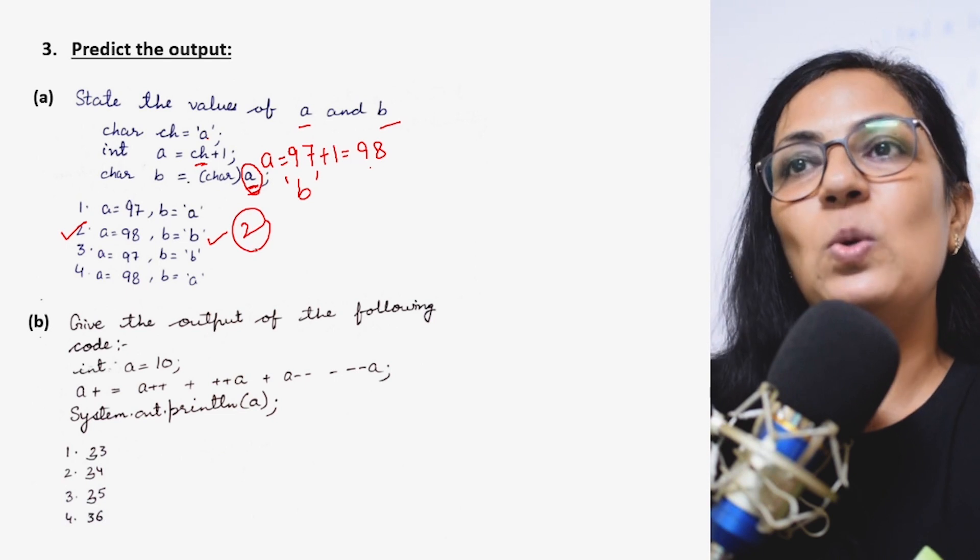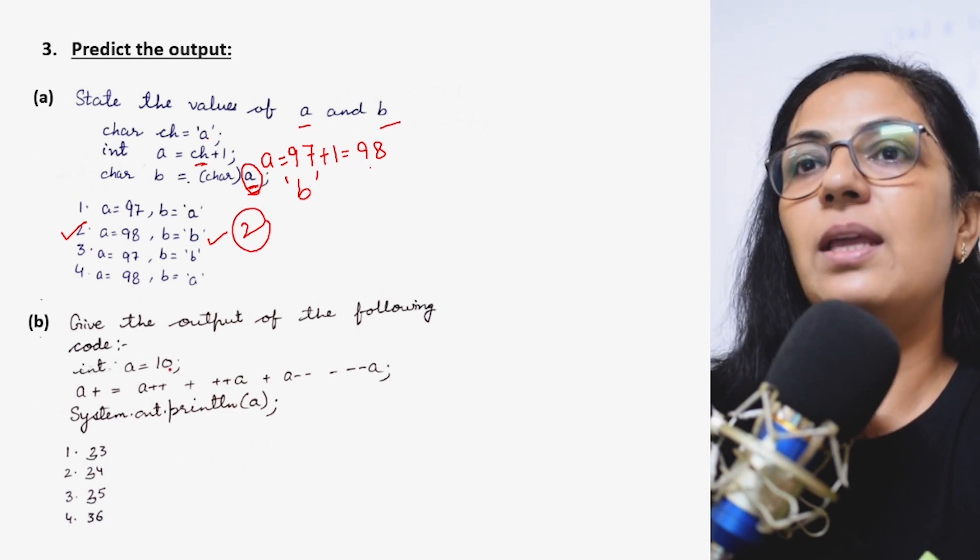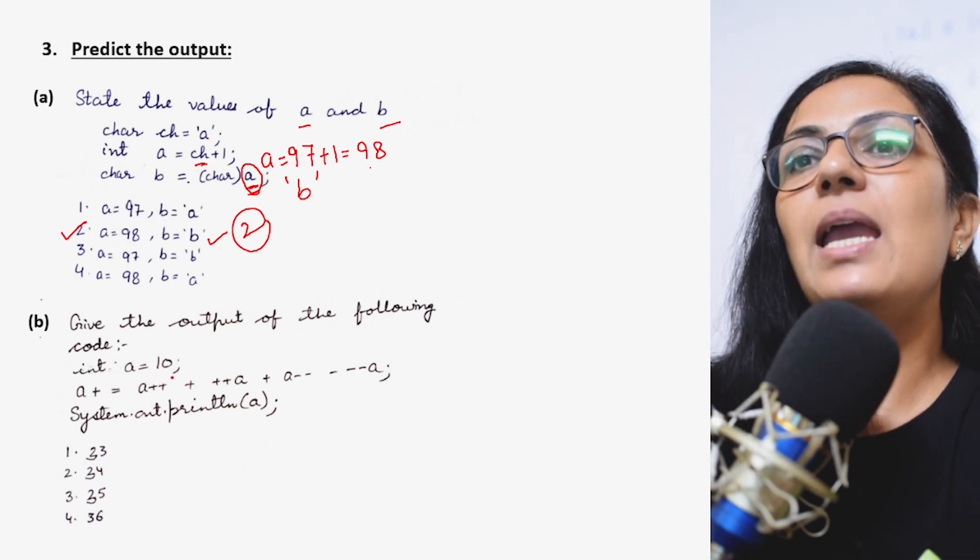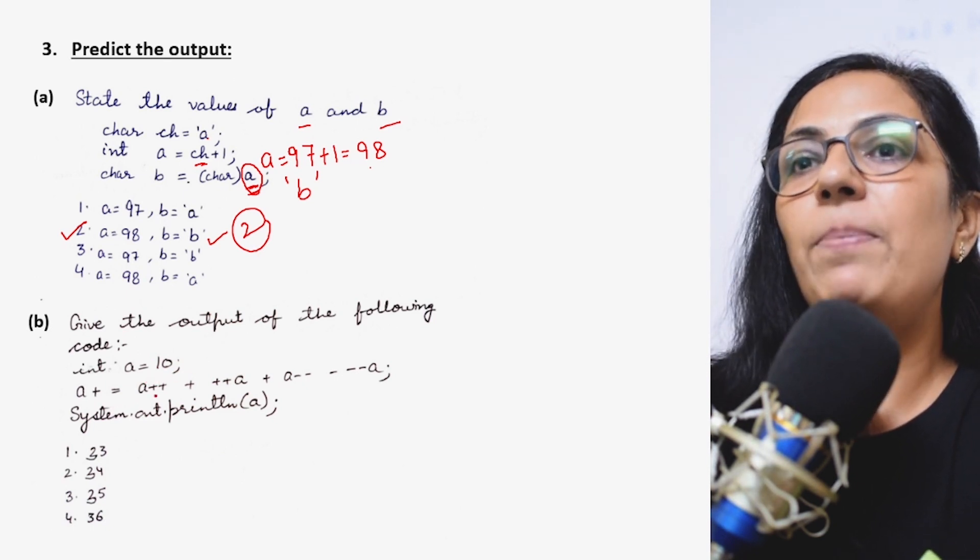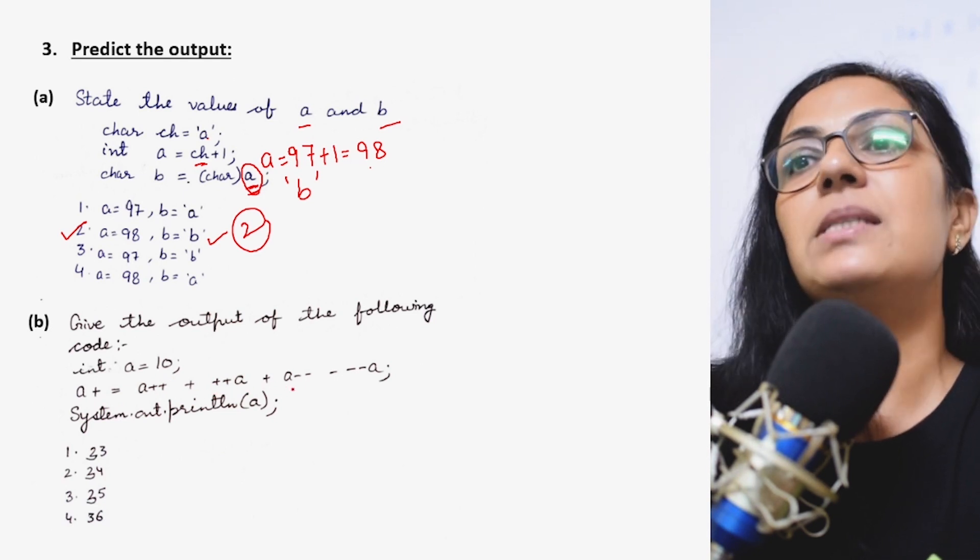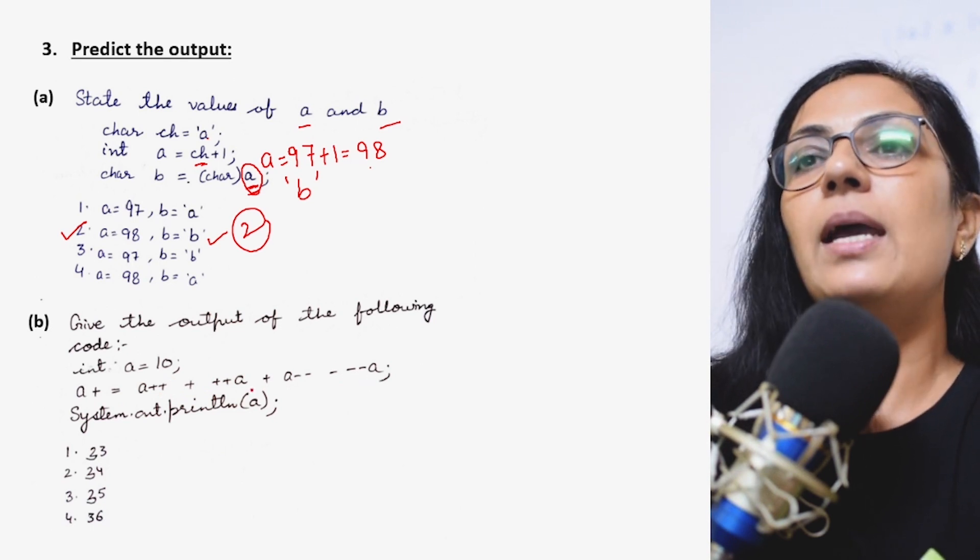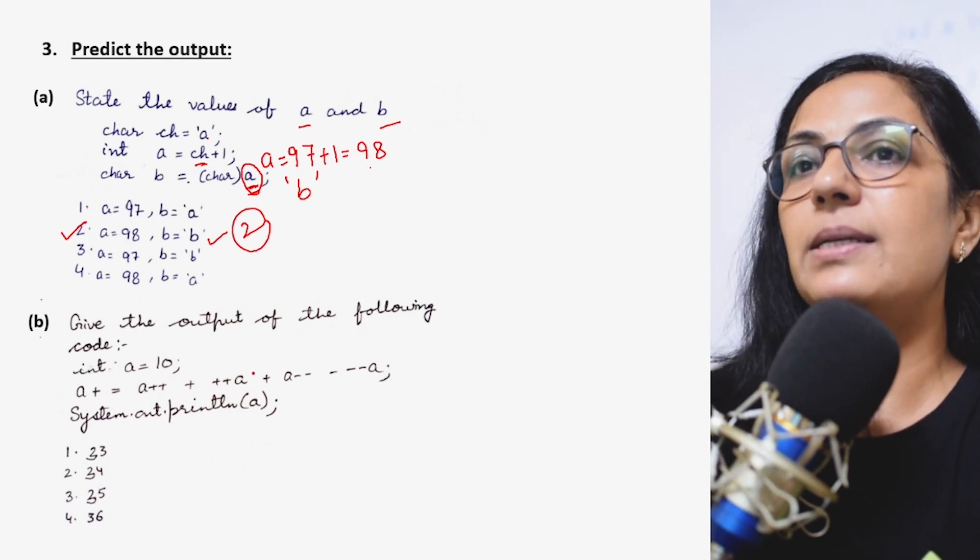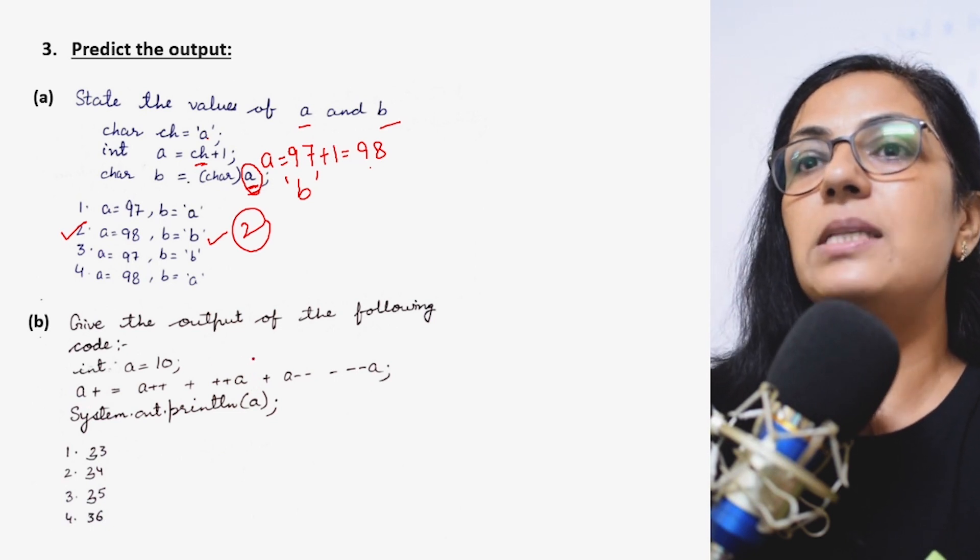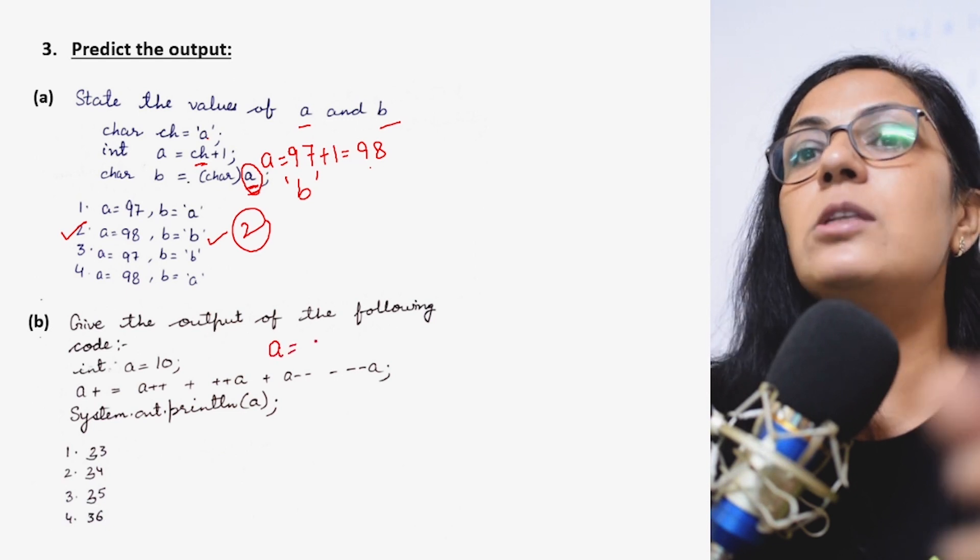We move on to the next question. Give the output of the following code: int a equals to 10, a plus equals to a plus plus plus plus a plus a plus a minus minus. Here increment and decrement operators are used along with this shorthand notation a plus equals to. That means how you are going to solve it? a equals to a plus.